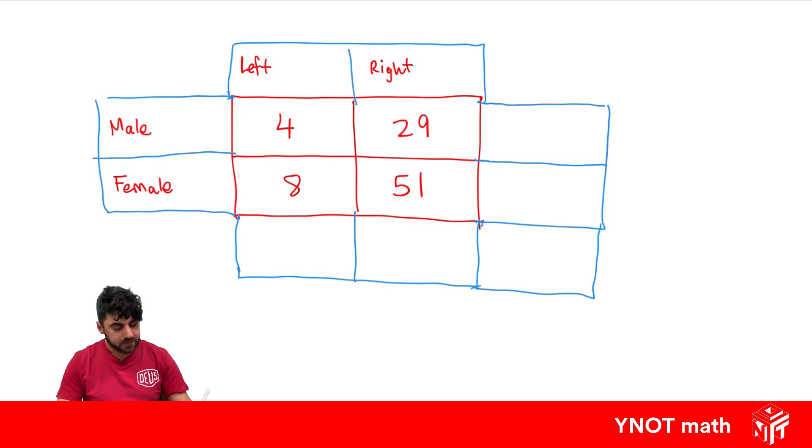Now we can get our totals. We put those at the end of each row and at the end of each column. 4 plus 29 gives us 33. 8 plus 51 gives us 59. 4 plus 8 gives us 12, and 29 plus 51 gives us 80. Then 12 plus 80 gives us 92. If we've done it correctly, 33 plus 59 also gives us 92.